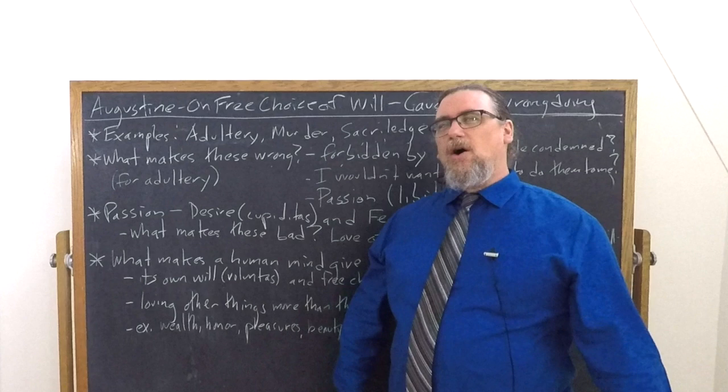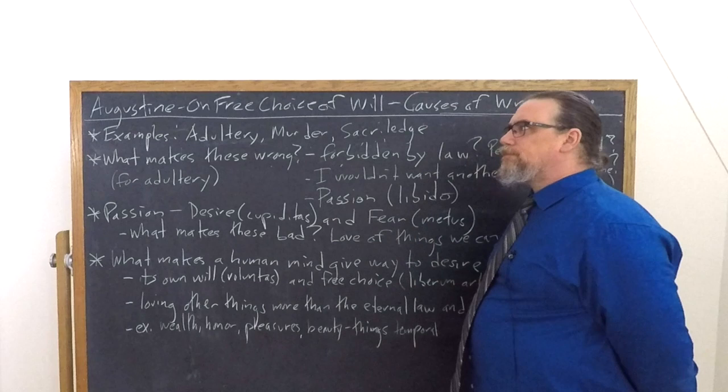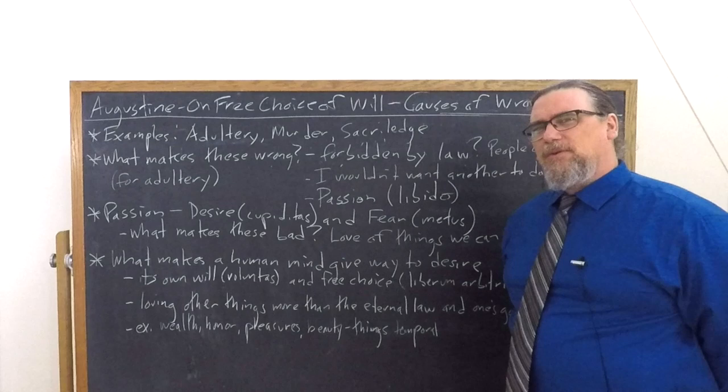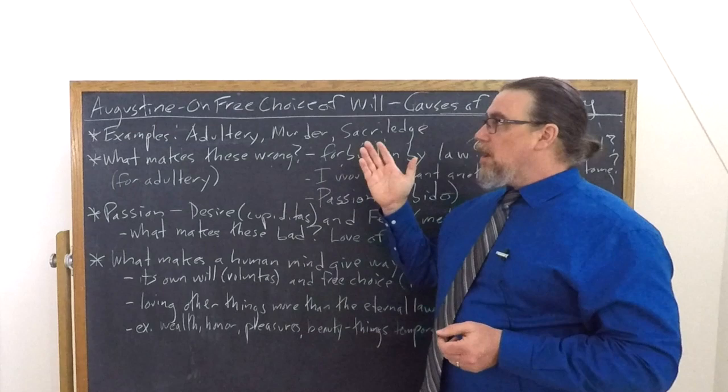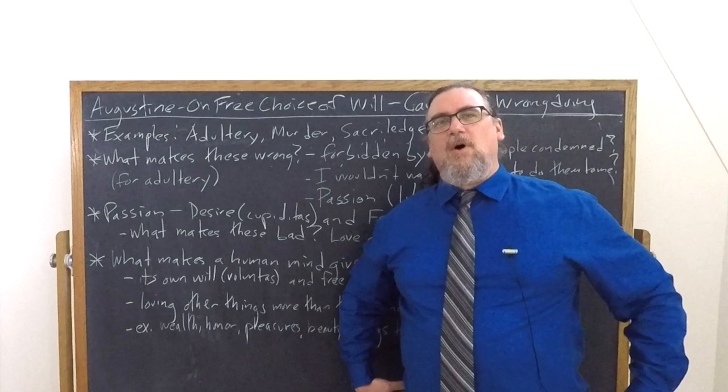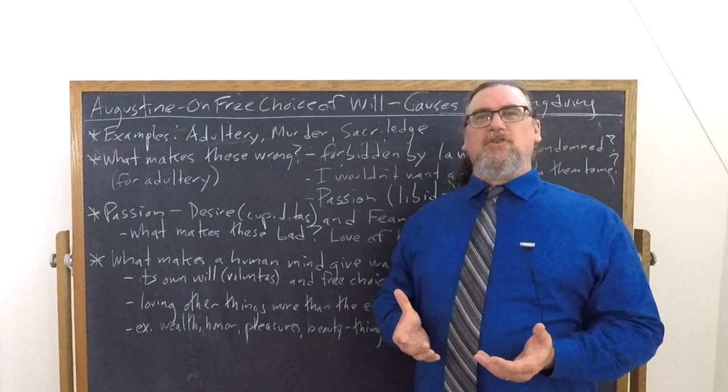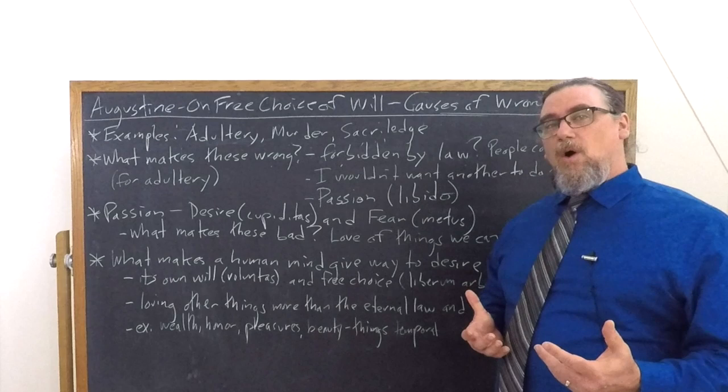Let's start by considering the three examples that the student brings up. Augustine says, what is wrongdoing? Well, adultery is wrongdoing, murder is wrongdoing, and sacrilege is wrongdoing. Now, they're going to have a very interesting discussion about what makes adultery wrong, and then another discussion about what makes murder wrong. They won't actually get into sacrilege as such, although we could easily extrapolate out from these principles something along those lines.